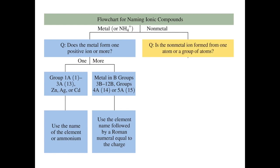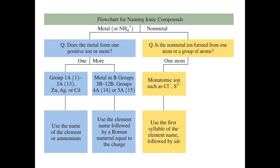then you want to use roman numerals to designate the charge of that cation. On the anion side, you want to ask, is the non-metal ion formed from one atom or groups of atoms? If you answer that it comes from one atom, then it's called a monatomic ion. You want to change the ending to -ide. If it's a group of atoms, then it's a polyatomic ion. You don't change the ending. You just use the polyatomic ion's name.